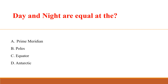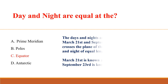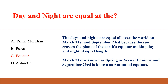Day and night are equal at the? Answer: C. Equator. The days and nights are equal all over the world on March 21st and September 23rd because the sun crosses the plane of the earth's equator, making day and night of equal length. March 21st is known as the spring or vernal equinox, and September 23rd is known as the autumnal equinox.